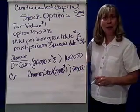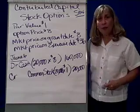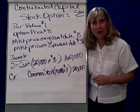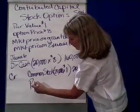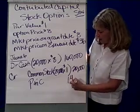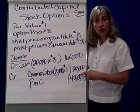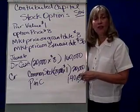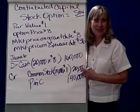Well, that entry doesn't balance. The corporation got $160,000 and gave up stock for $20,000. But who comes to our rescue? Paid-in capital — or think pink — for the difference. So the difference is $140,000. This is the journal entry when the employee exercised their stock option, received stock, and the corporation got some cash.